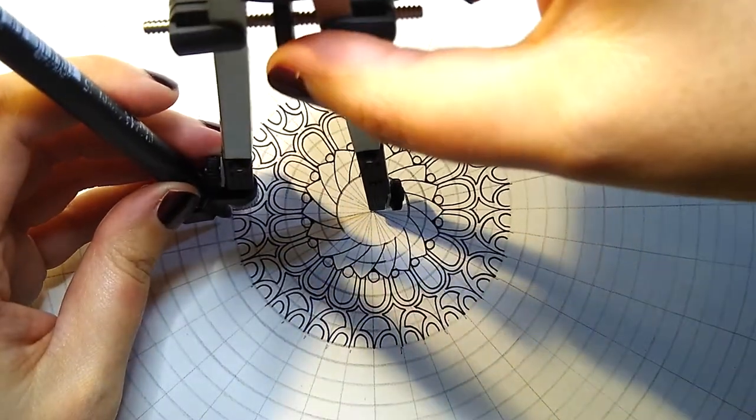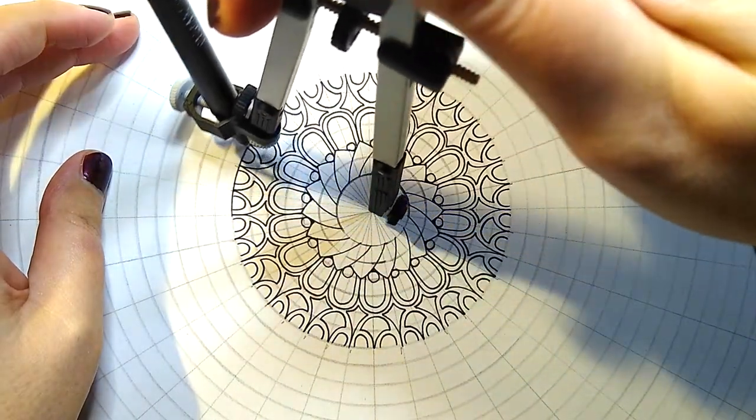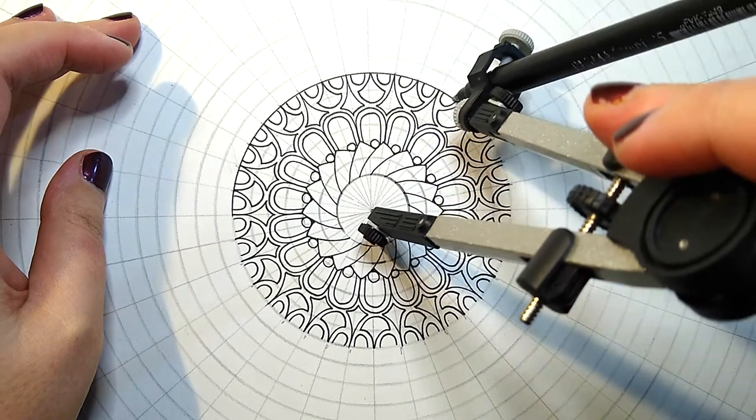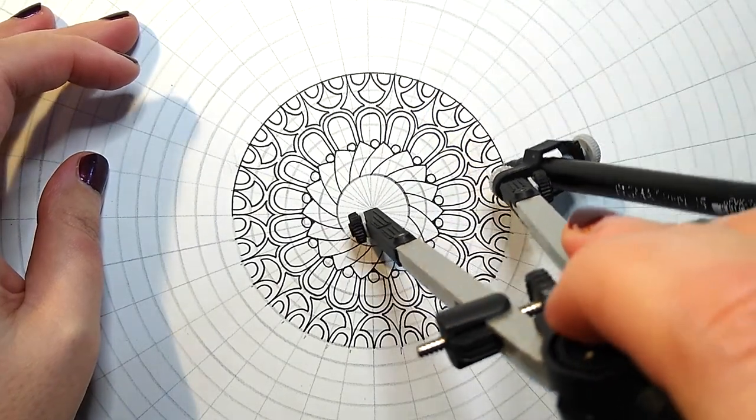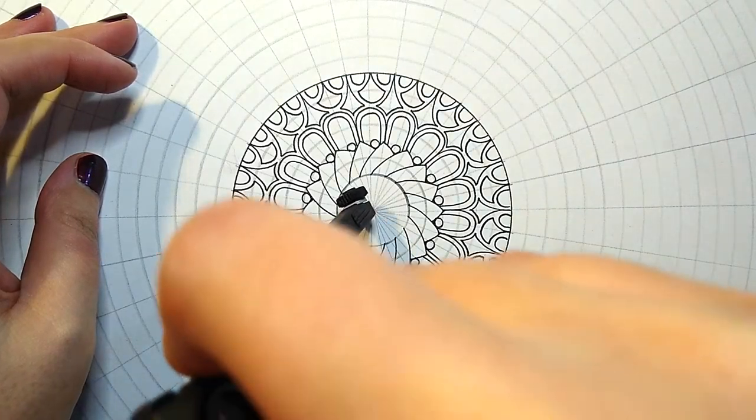So I switched my pencil on my compass out and I'm using here a PN Pigma Micron pen to go all the way around, taking my time to go nice and slow, making a relatively precise circle.